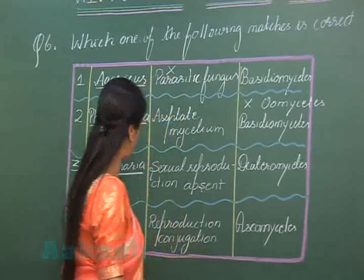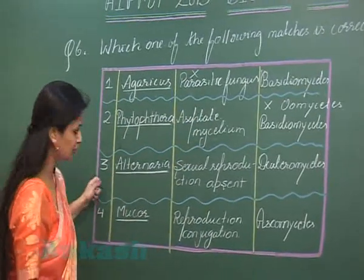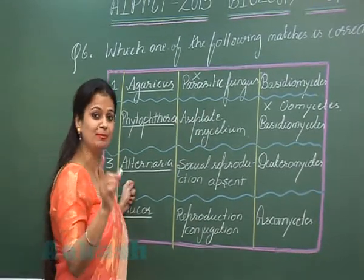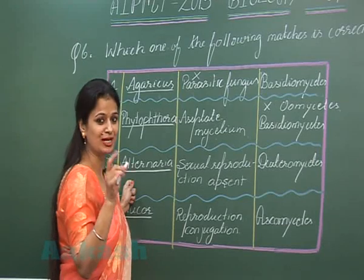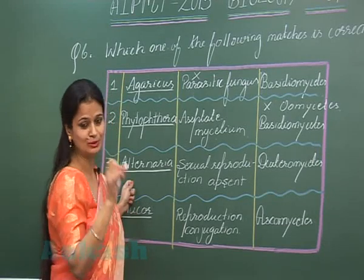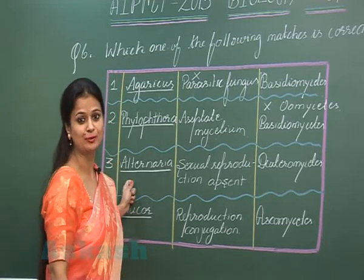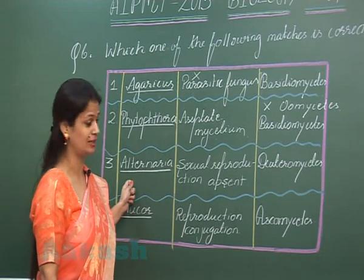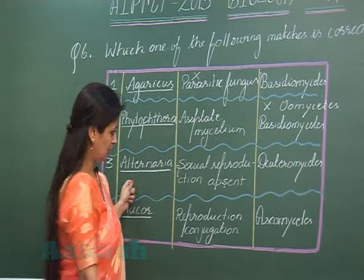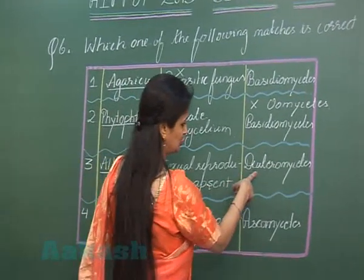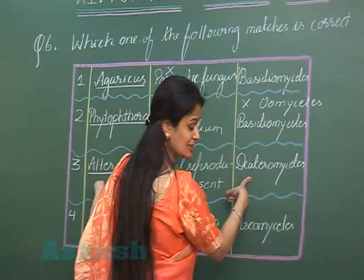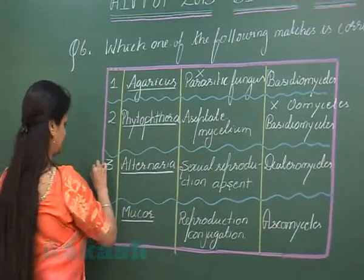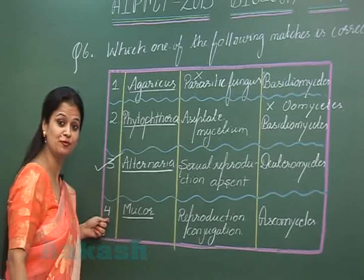Coming to option three: Alternaria is listed as a member of Deuteromycetes. In Deuteromycetes, sexual reproduction is absent. Since this statement is correct, option three is the right answer.